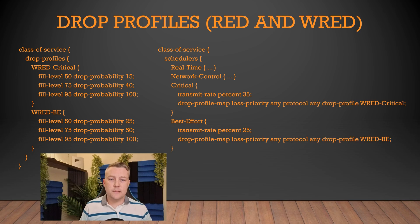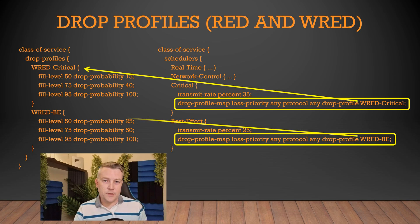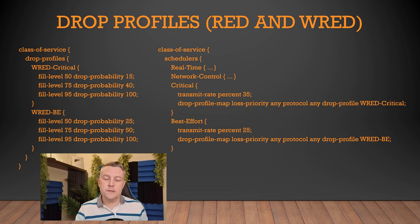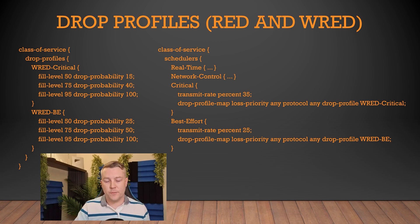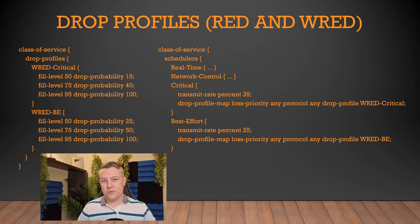Drop profiles are then assigned to a scheduler — these are the schedulers we created in a previous video — and we've linked our drop profiles to them using a drop profile map. There are four schedulers, but only two of them have drop profiles. Not all types of traffic will benefit from this proactive packet dropping. Think of real-time traffic: voice, video, that sort of thing. Dropping that traffic is really a big no-no, so avoid it as best you can. Try to avoid congestion by proactively dropping packets in your other queues, the ones that are more tolerant to that sort of thing.